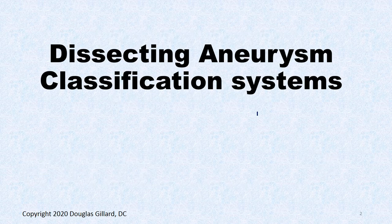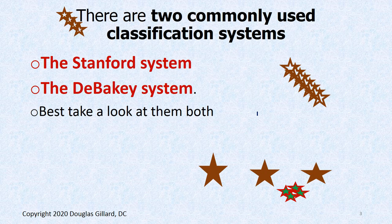It is the winter of 2021, week four, Thursday. We were talking about dissecting aneurysms last time, so let's continue our discussion. How are these things classified? There are two systems you need to know: the Stanford system and the DeBakey system.